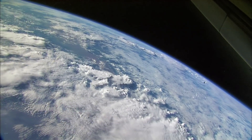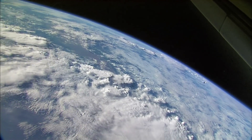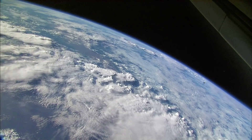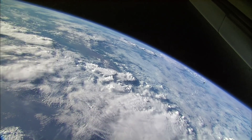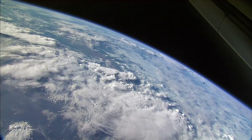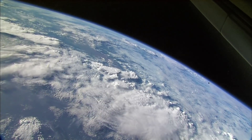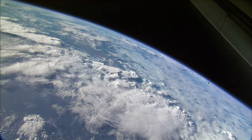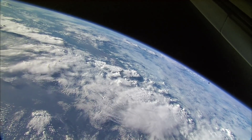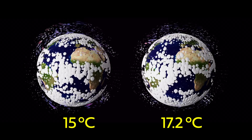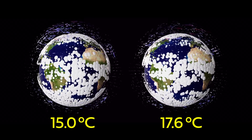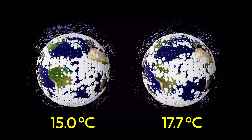Therefore, you would expect that if the Earth were to warm, more clouds would form, and these clouds would then act to cool the Earth, acting as a moderating influence, pushing it back to its original cooler temperature. Let's test this. Dialing in some global warming, we start to see more clouds.